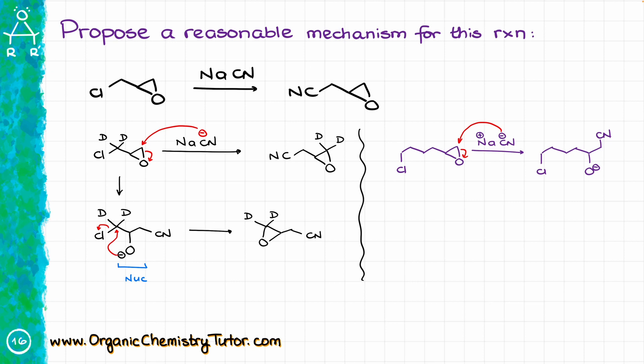And this intermediate again can react intramolecularly, displacing the chlorine and making a ring. In this case, it's going to be a 1, 2, 3, 4, 5, 6-membered ring with an oxygen, and my final product will look like this.